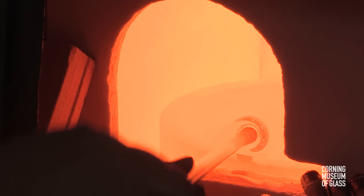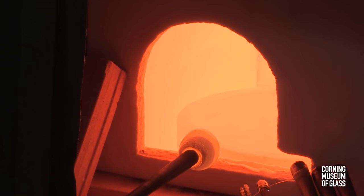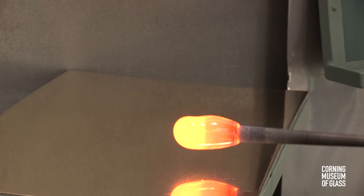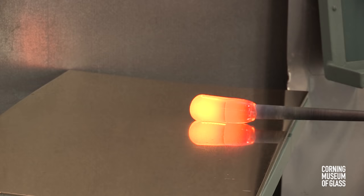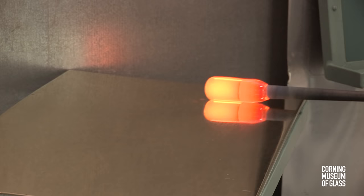The end of the blowpipe: a moderate-size gather of glass is made on the end of the blowpipe. This will become the bowl, or cup, of the goblet. The gather is elongated and marvered to make it perfectly round and perfectly concentric with the blowpipe.